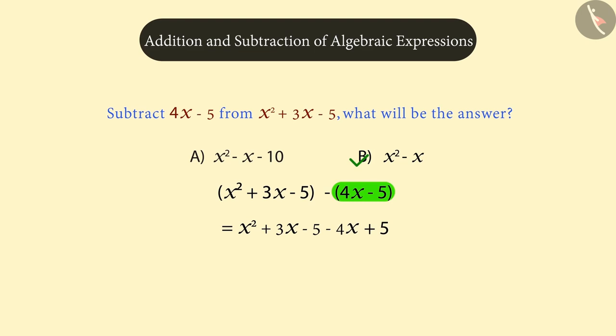Now, this is where we make mistakes. When opening the brackets, we replace 4x with negative 4x. But we forget to replace the symbol negative 5. We write negative 5 in the same way. So, our second step would look like this. After simplifying in this way, we get this answer.